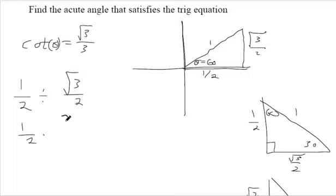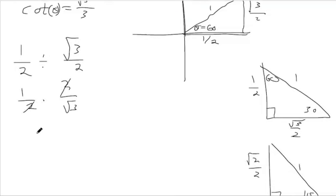So we'd flip and multiply. These 2's would cross-cancel. And so this is 1 over square root of 3.